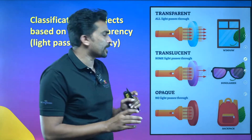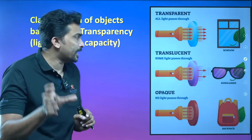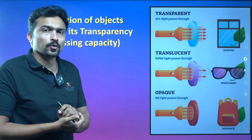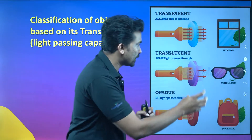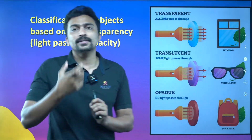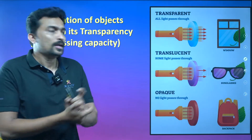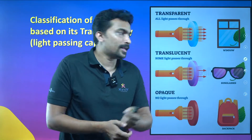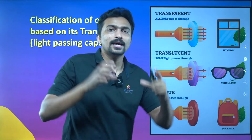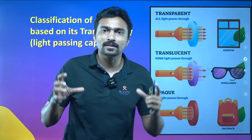If we go to translucent objects, some light passes through. For example, sunglasses — you can make an example of sunglasses.